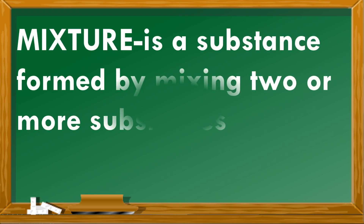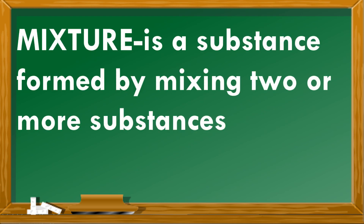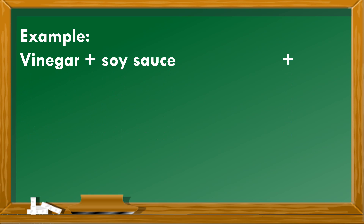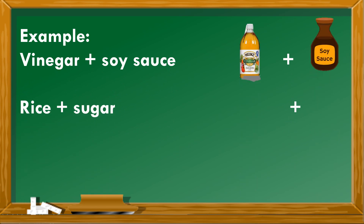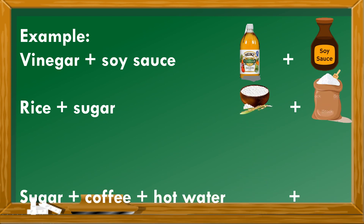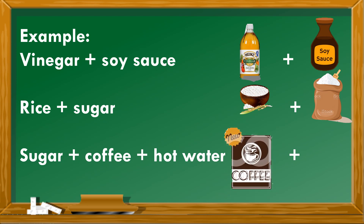What is a mixture? A mixture is a substance formed by mixing two or more substances together. For example, when you add vinegar and soy sauce it forms a mixture. Adding rice and sugar also forms a mixture, and even when you add sugar, coffee, and hot water it also forms a mixture.